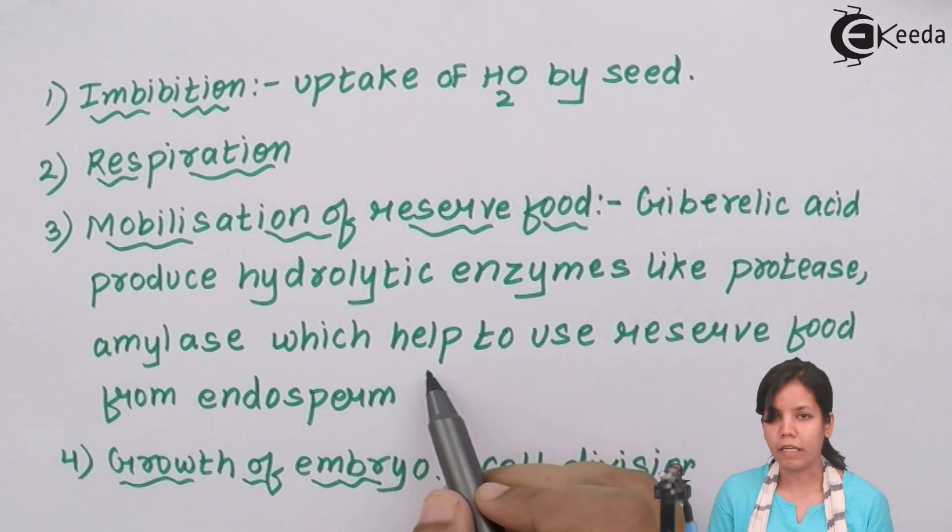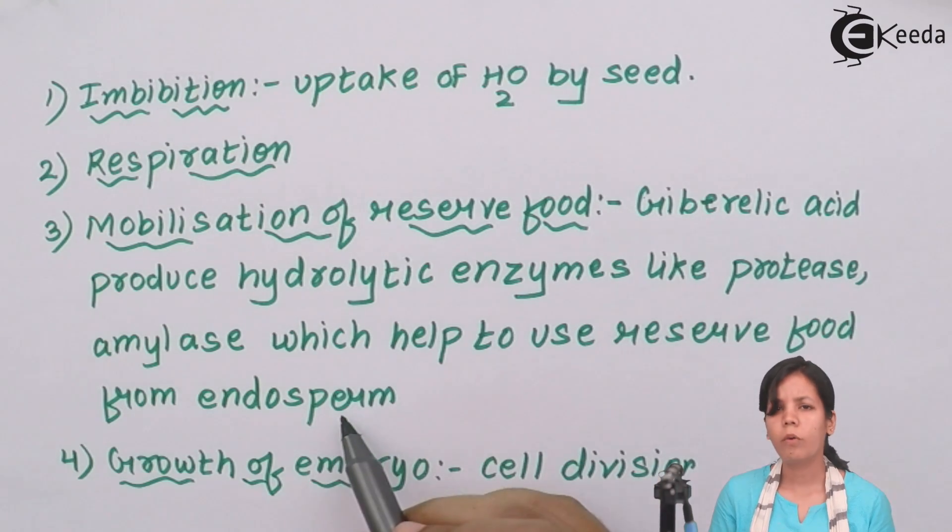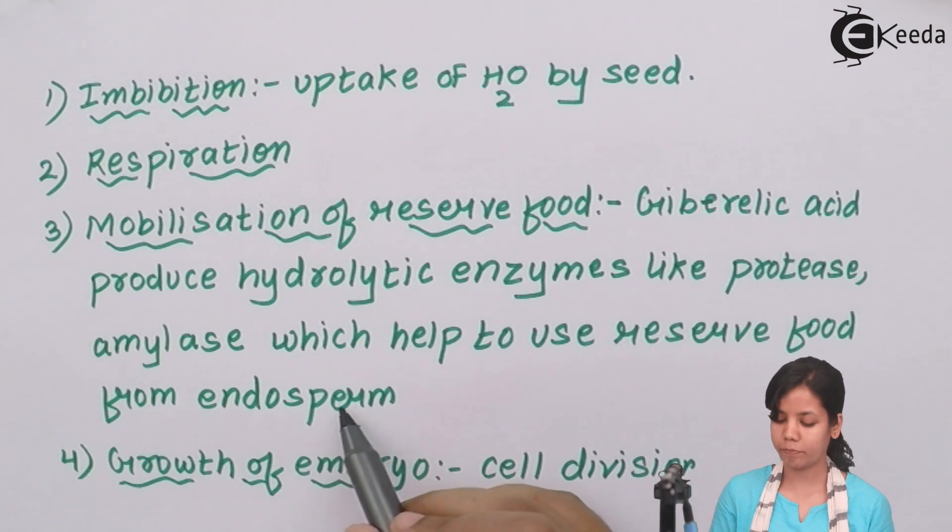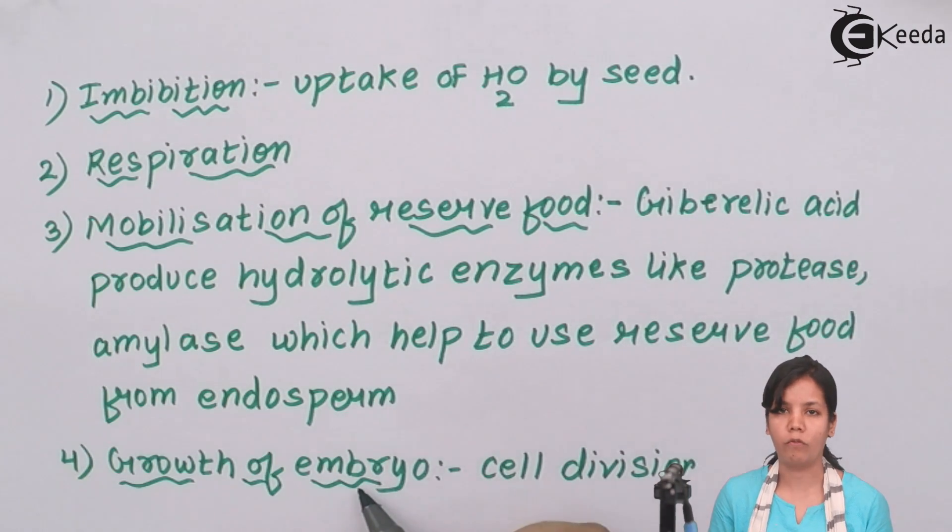Now the reserved food material is used from the endosperm. When I say endosperm it means the seed coat or the outer covering of the plant. And the last step, growth of the embryo. After plants have received sunlight, they have received nutrients from the soil, you have added water and after the whole growth period the plant actually grows.